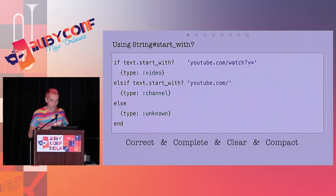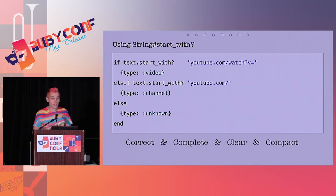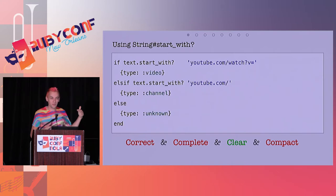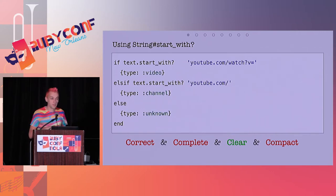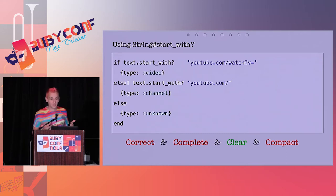This is how our first pass would look. How does this rank for what we're trying to achieve? It's clear — it's pretty readable, pretty English. It's not compact because we have some repetition; `start_with?` appears twice. It's not complete — we're only trying to match the type, not returning the ID or the name. And even worse, it's not correct. If your URL is simply `youtube.com/`, that is not a channel — that is actually YouTube's homepage.